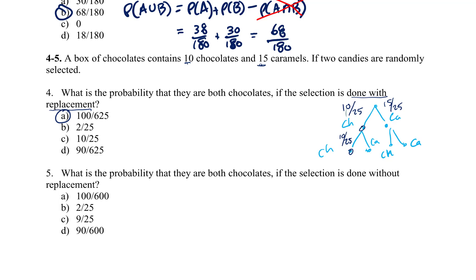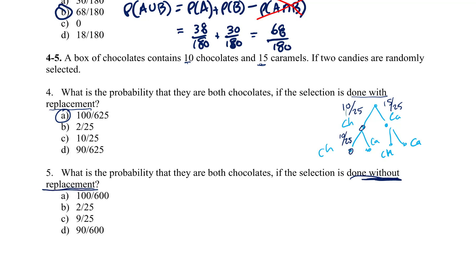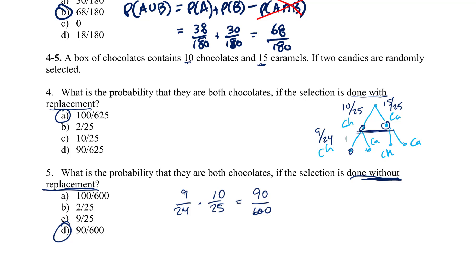For question 5, selection is done without replacement, which makes more sense in a candy situation. The first draw still has a 10/25 chance of chocolate, but then there are only 9 chocolates and 24 total candies left. So the probability of two chocolates is 9/24 times 10/25, which gives 90/600. The key difference is that without replacement, the sample space changes on the second draw.